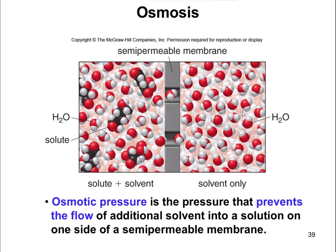Well, we defined osmosis as water moving from low solute to high solute, which means there's no solute over here on the right, and there's a higher solute over here on the left, so that means water is going to go from right to left in this case.